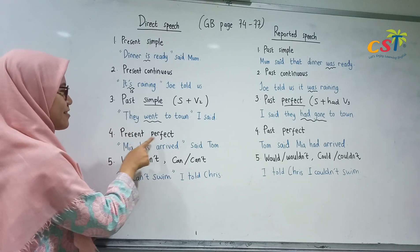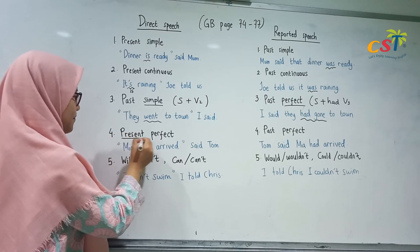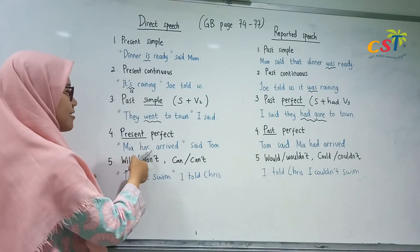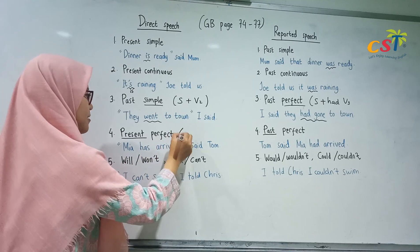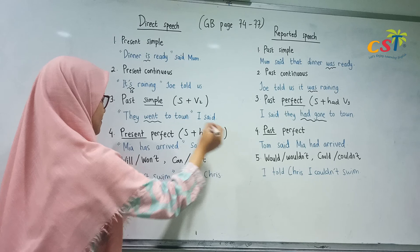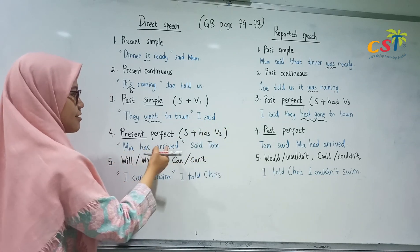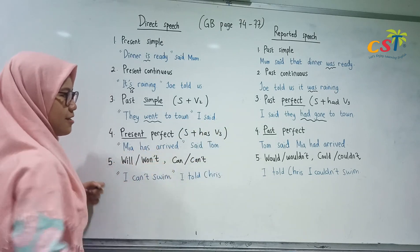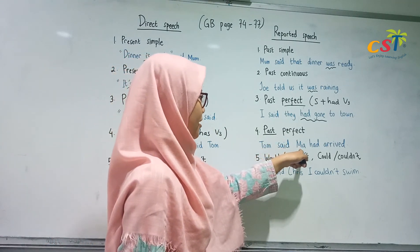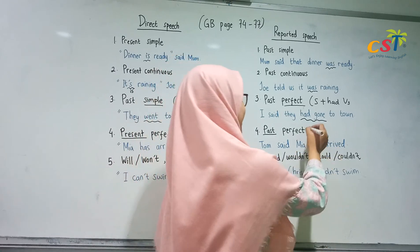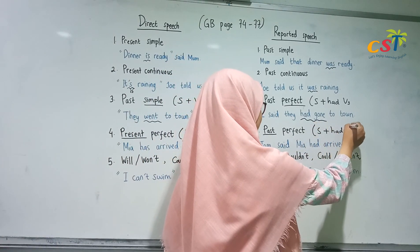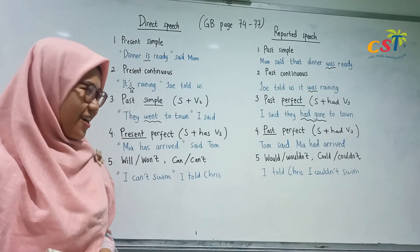Next: present perfect changes into past perfect. For example: 'Mia has arrived.' This is present perfect — subject plus 'has' plus verb three. You change it into past perfect: 'Tom said Mia had arrived.' Past perfect uses subject plus 'had' plus verb three.